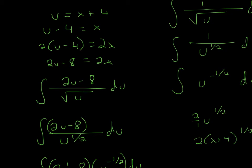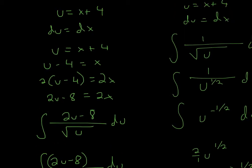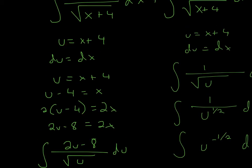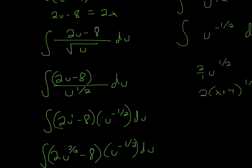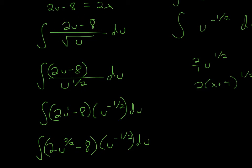So we get (2u minus 8) over the square root of u. Remember that u is equal to x plus 4, so we can replace the entire denominator with u. Now we have u's for both the numerator and the denominator, and we can actually take the integral. The first thing we do is change the square root to the exponent 1/2.